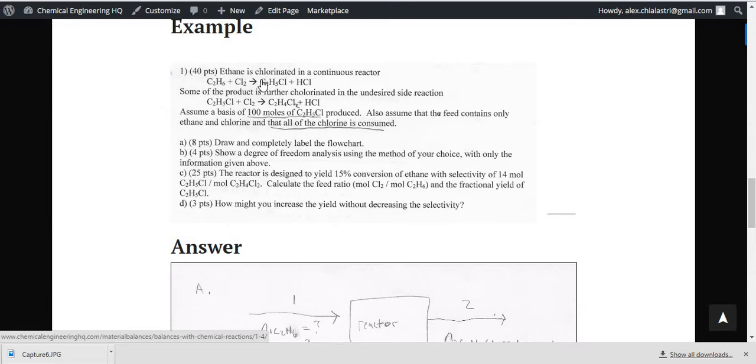But all of this being said, there's a reaction of ethane which is chlorinated into C2H5Cl plus HCl. Some of that C2H5Cl also has a side reaction to turn it into C2H4Cl2 and more HCl. And we know that 100 moles of C2H5Cl are produced.